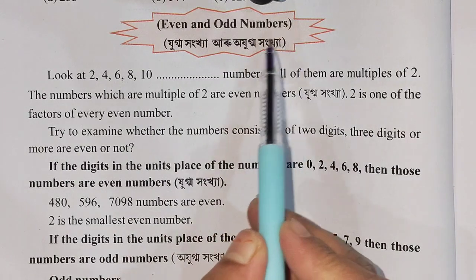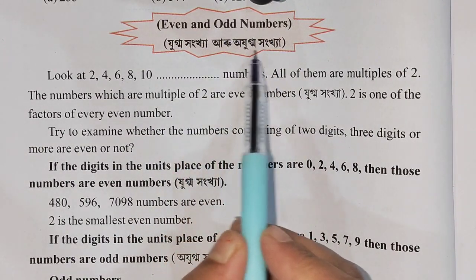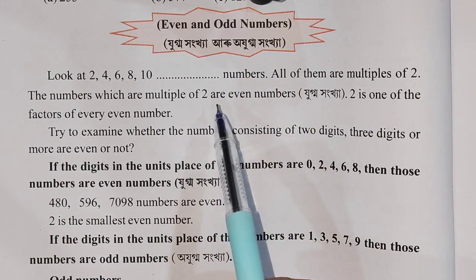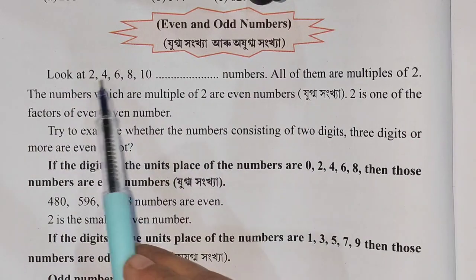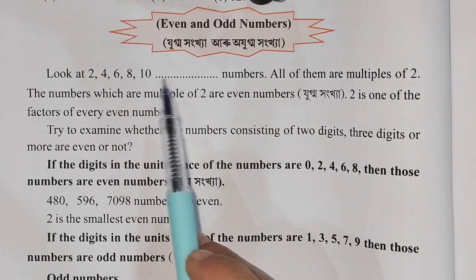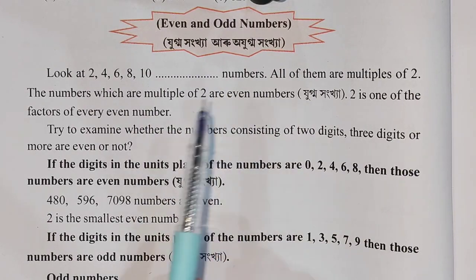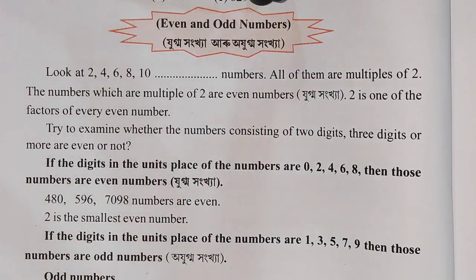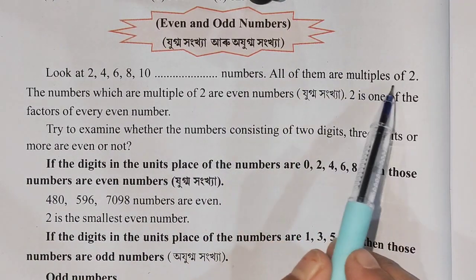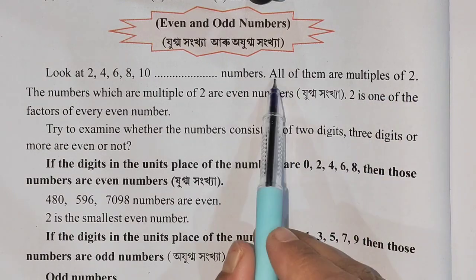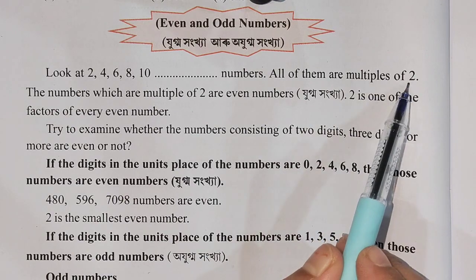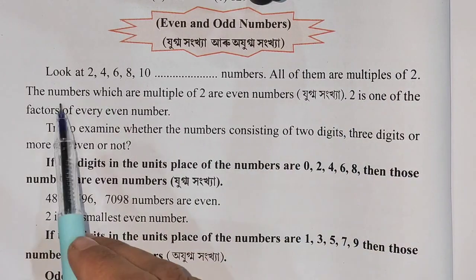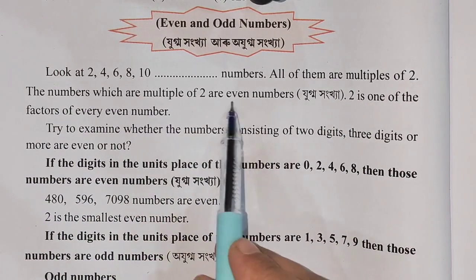Let's see: even and odd numbers. Here, look at 2, 4, 6, 8, 10 — all of them are multiples of two. Numbers which are multiples of two are even numbers.